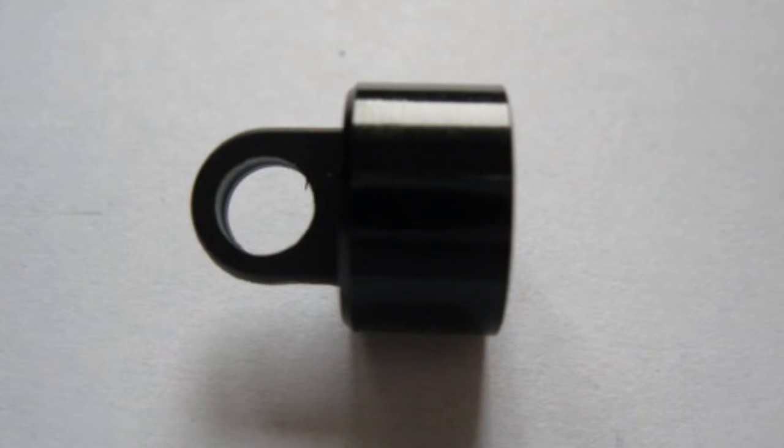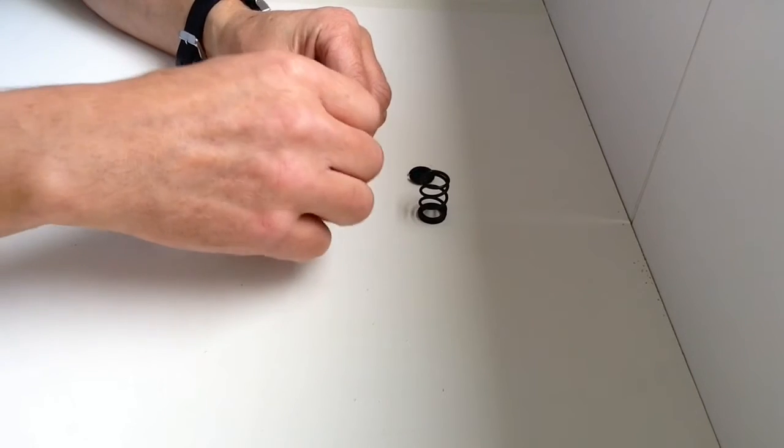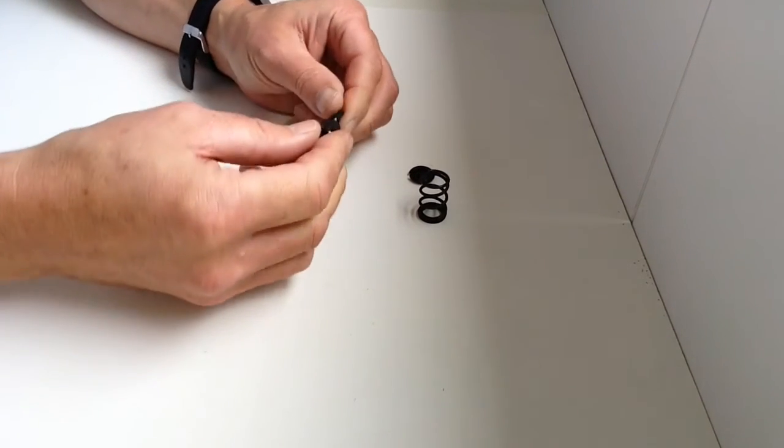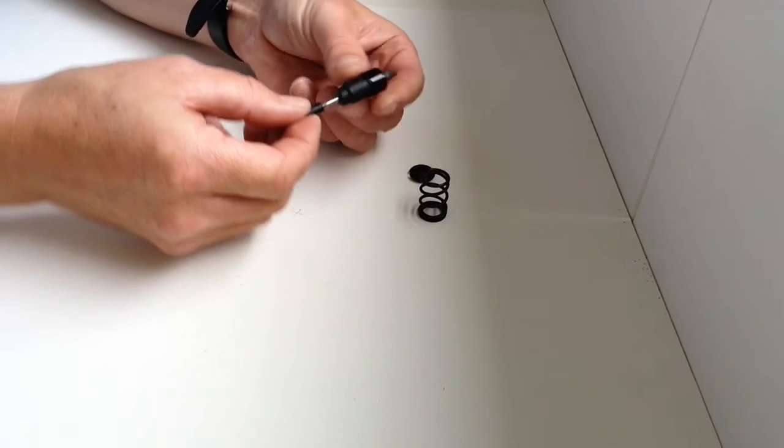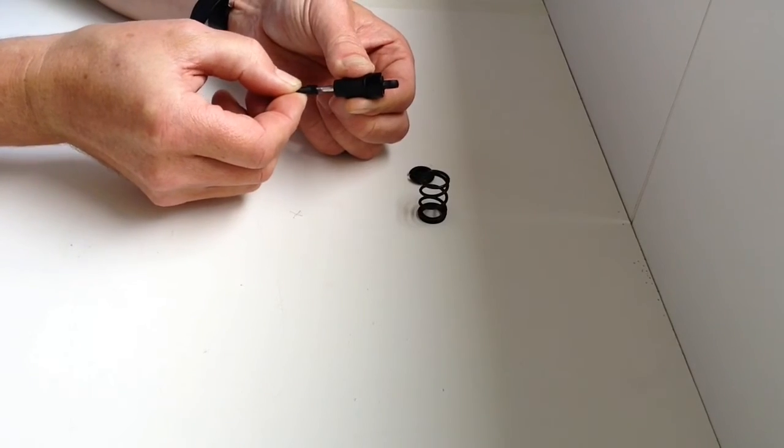Place that over the top and then tighten that up. Don't over-tighten it, just enough to create the seal so that you now have your shock absorber.